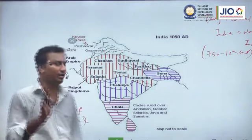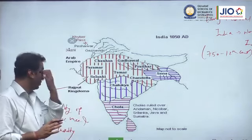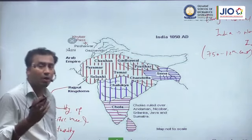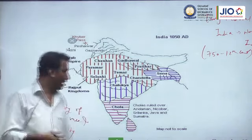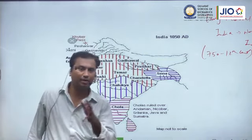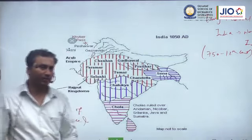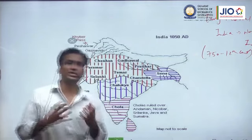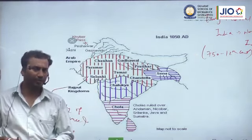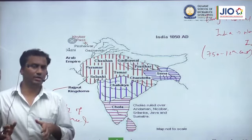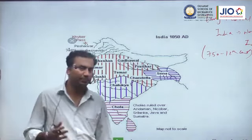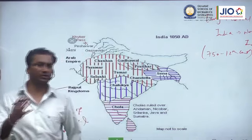The map of Deccan and South India is in a separate slide and will make clear what the scenario was there. But first we will get to know what exactly the Rajput kingdoms are and what the term 'Rajput' means. As mentioned, these are peoples who belong to a particular ethnicity and race, and there are different views among historians about how the Rajputs originated.